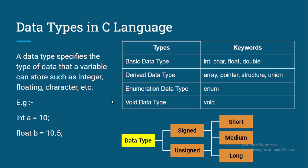Let's start with the next important topic — data types in C language. In any language, data types are one of the most important topics and we should understand them from A to Z. We will talk about each and every data type, what the memory sizes are, how much data we can store, and the data range. I will give you a simple formula by which, if you know the memory size of a data type, you can easily calculate its range.